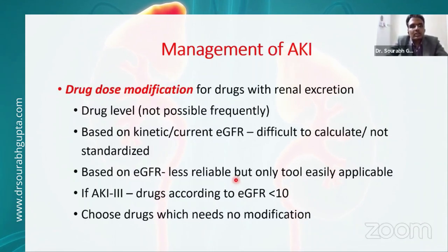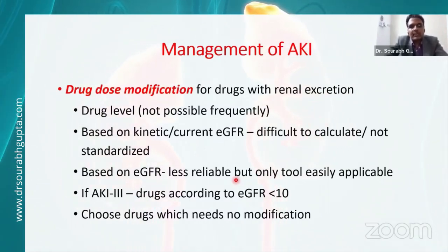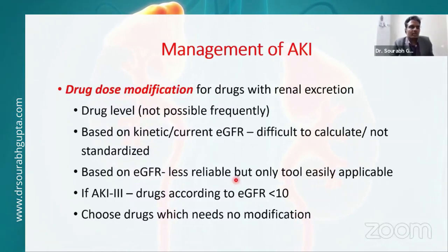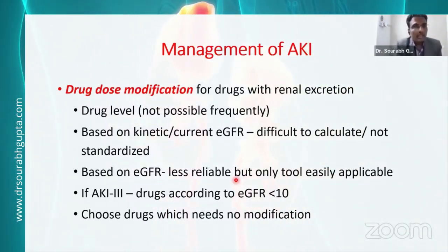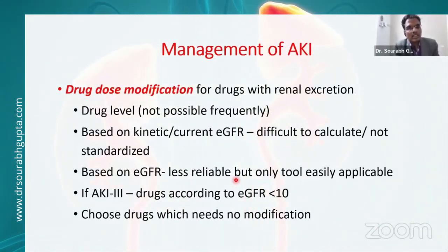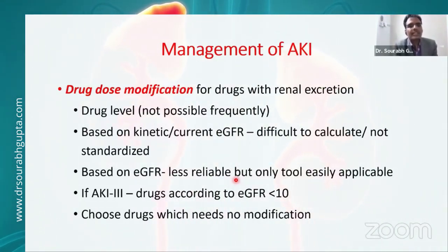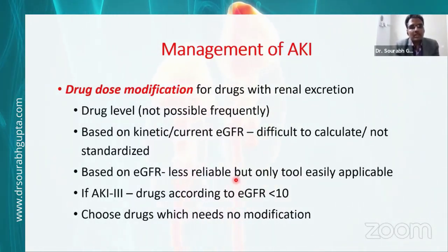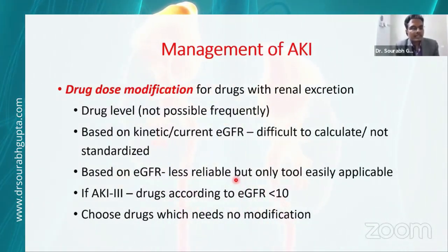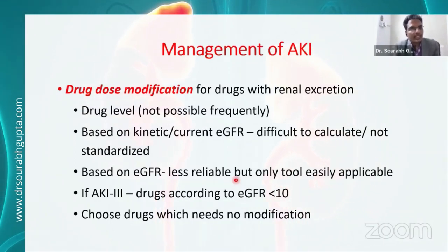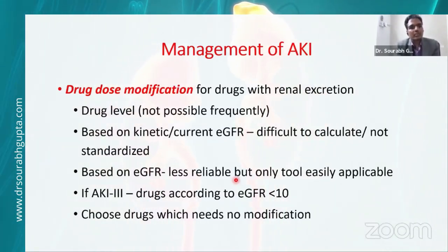Drug dose modification is required for renally-excreted drugs. Drug level monitoring should be done if available. One can calculate kinetic GFR, though it is difficult to standardize. EGFR-based dosing is the most common method but is not reliable or proven for acute kidney injury — it is designed for chronic kidney disease staging. If AKI Stage 3 is present, one can assume GFR is probably less than 10 ml/min and dose accordingly. Preferably use medications with hepatic excretion that do not require modification.